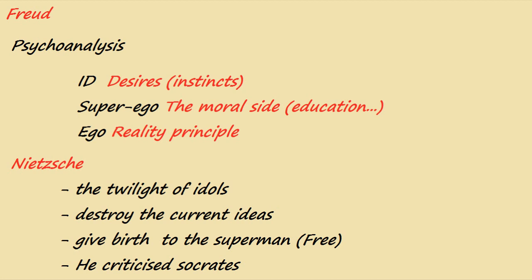This leads us to the next scientist, Nietzsche. Nietzsche wrote a book called 'The Twilight of the Idols' — I recently started to read it and I highly advise you to read it, it's an amazing book. Nietzsche tells us to destroy the ideas we currently have in order to give birth to the superman inside us — a superman who is free. He's talking about freedom, and he also criticized Socrates. This concludes the scientific roots.